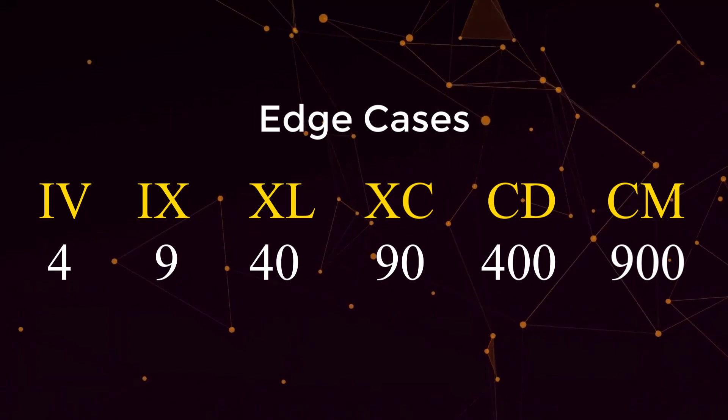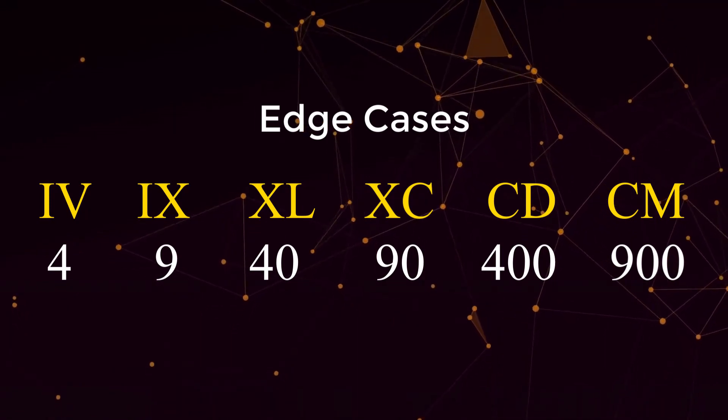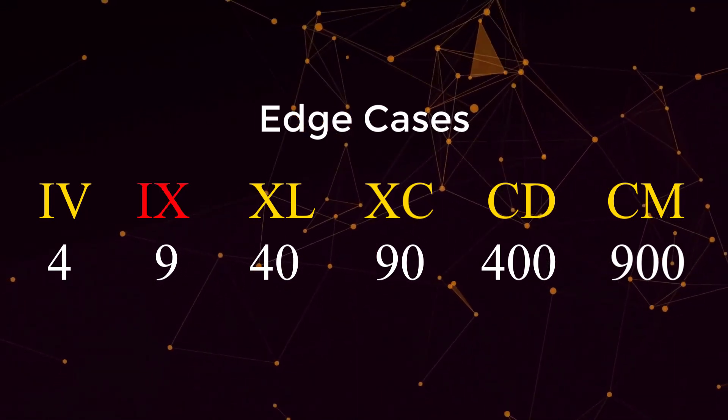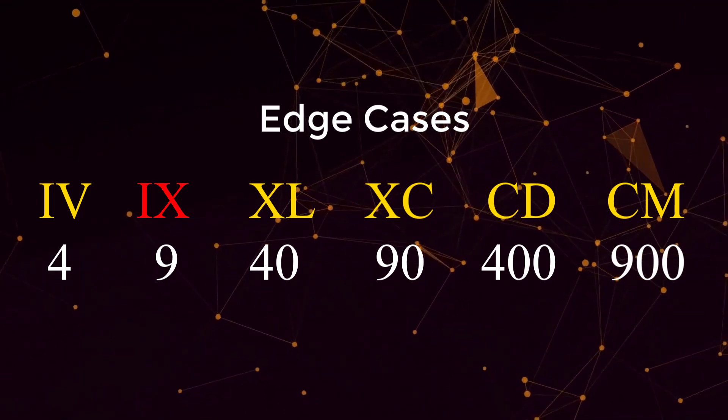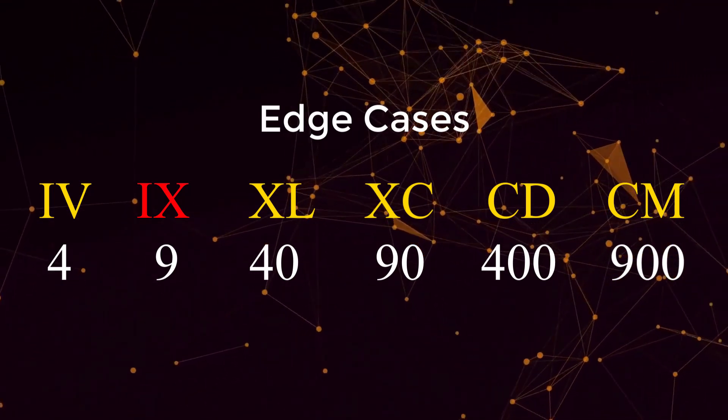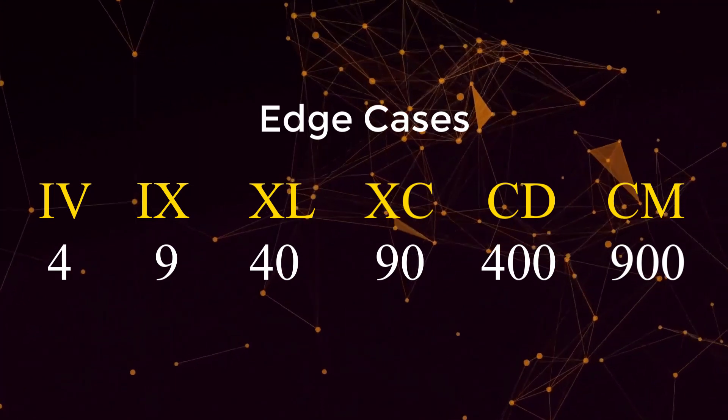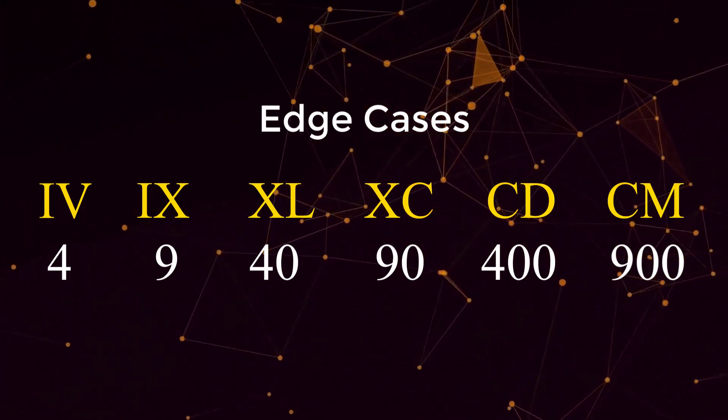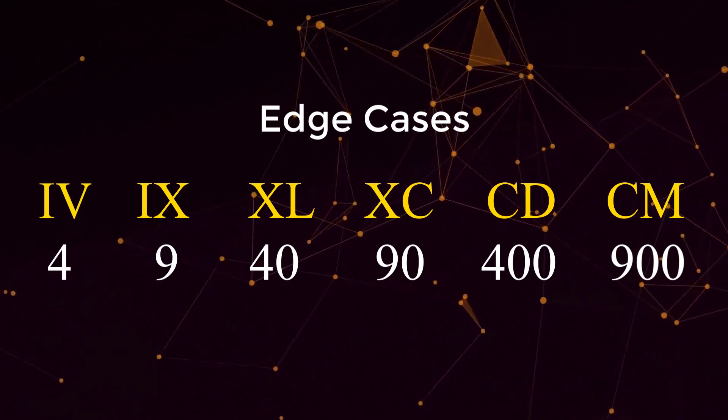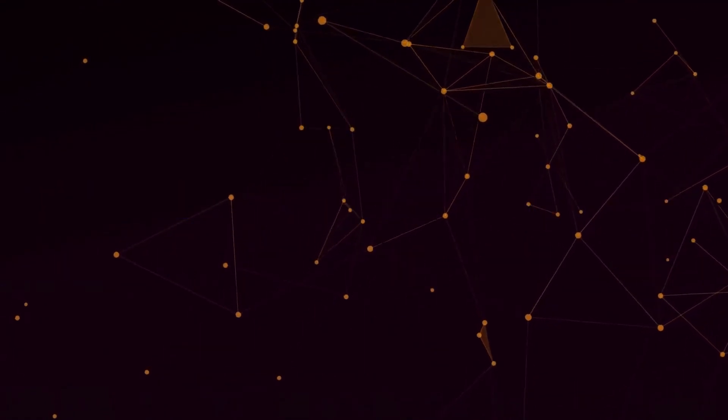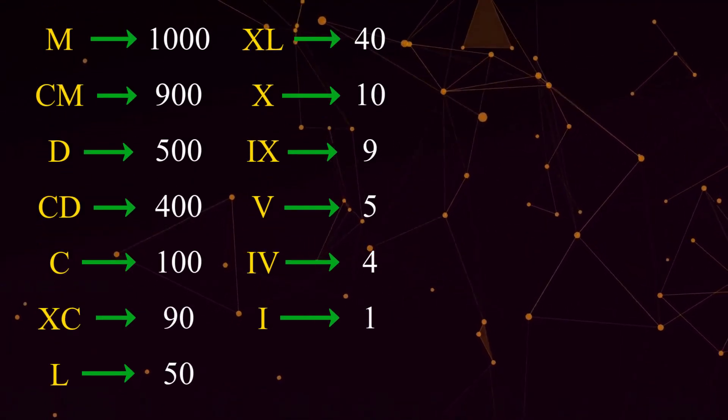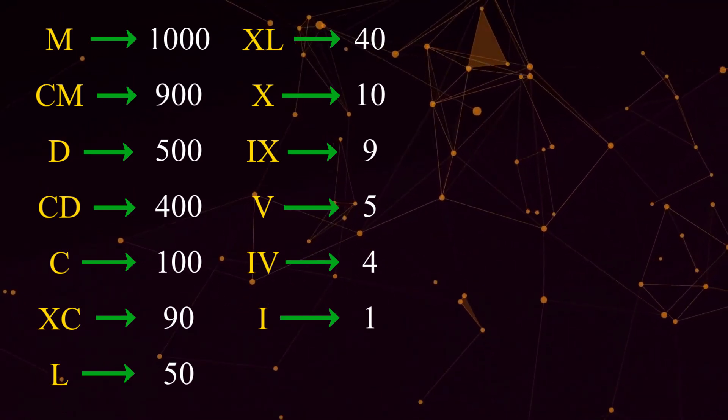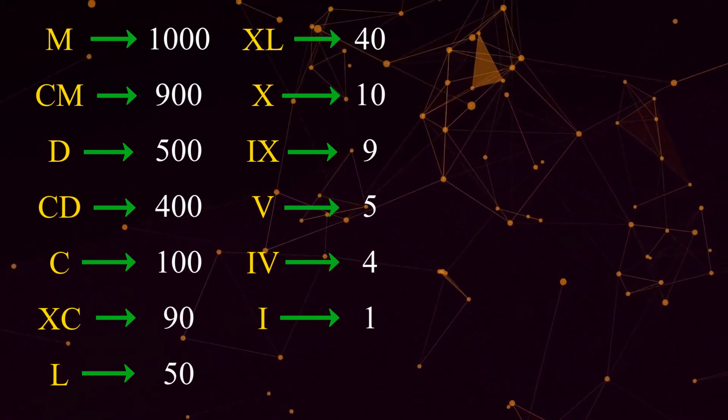Here are some of the other edge cases that we're going to have to consider. 9 is equal to the roman numeral IX because we do X minus I which is 10 minus 1 equals 9. Same thing with 40, 90, 400, and 900. We are always subtracting the roman numeral on the right from the roman numeral on the left. So in total here are all of the conversions from roman numerals to integers and this is including the edge cases.